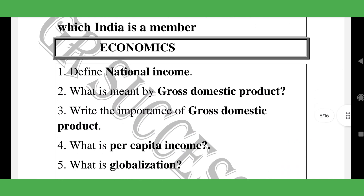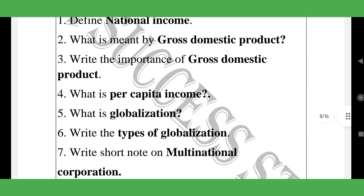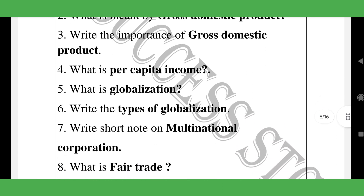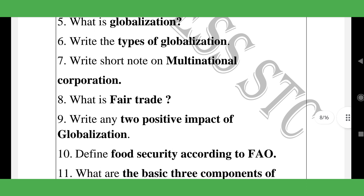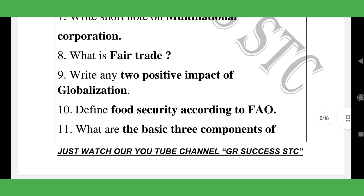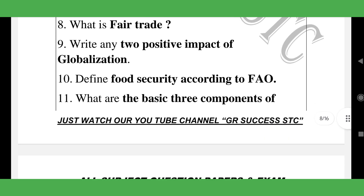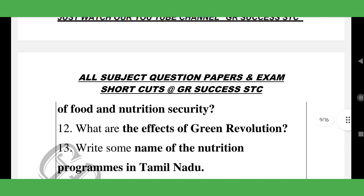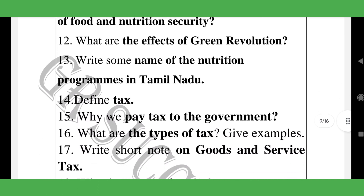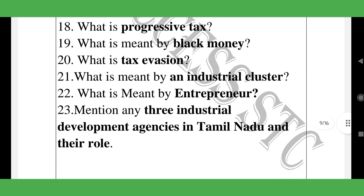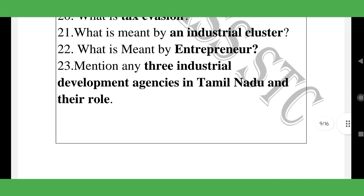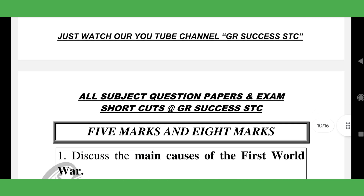Economics topics: National Income, Gross Domestic Product, Net Domestic Product, Per Capita Income, globalization, types of globalization, multinational corporations, fair trade, black money, tax evasion, industrial clusters, entrepreneur — totaling around 23 two-mark questions in economics.